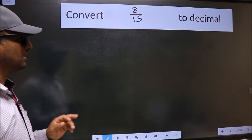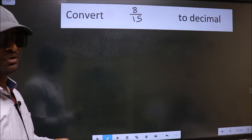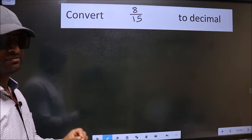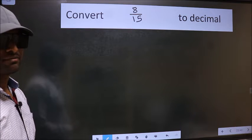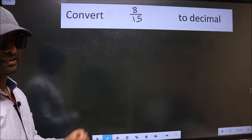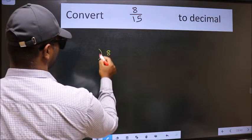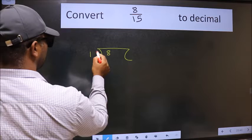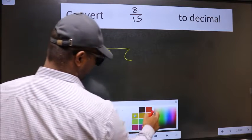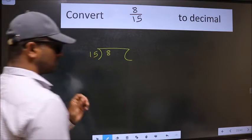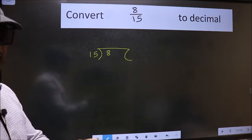Convert 8 by 15 to decimal. To convert to decimal, we have to divide. And to divide, we should frame it in this way. 8 here and 15 here. This is your step 1.